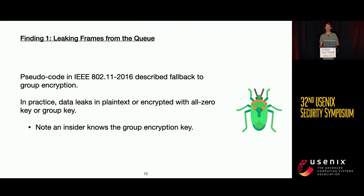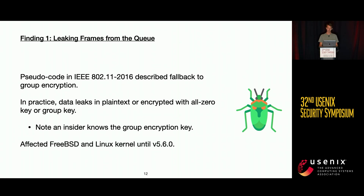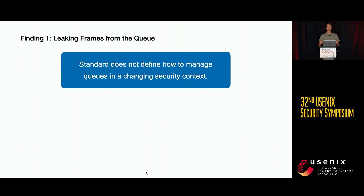In practice, we more commonly find that data leaks with all-zero keys or just in plaintext itself. When we refer to a group encryption key, it's important to note that it is shared among all users in the network. So if data leaks under the group encryption key, it requires an attacker who has knowledge of the shared network key. These issues were found in both FreeBSD and the Linux kernel.